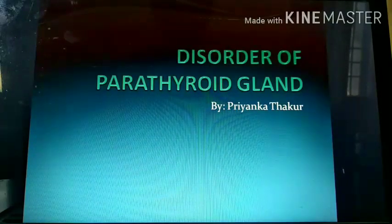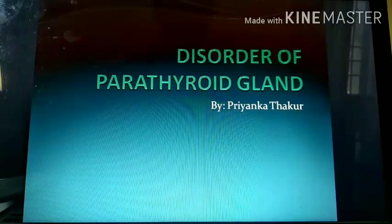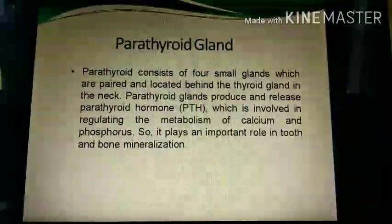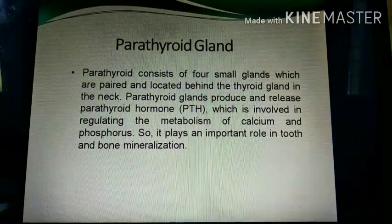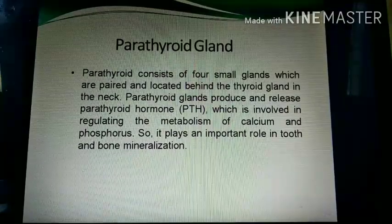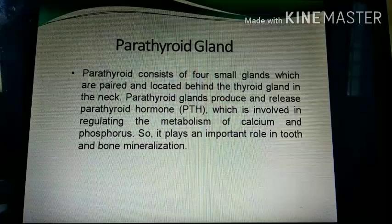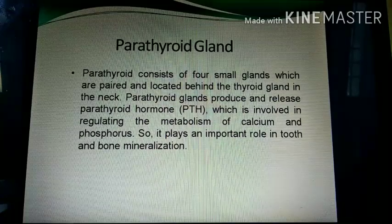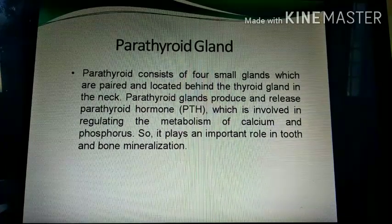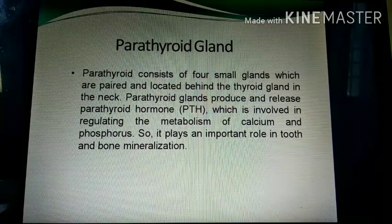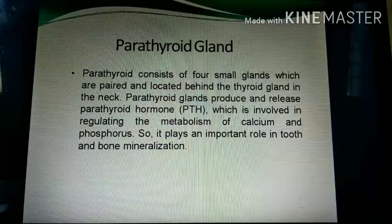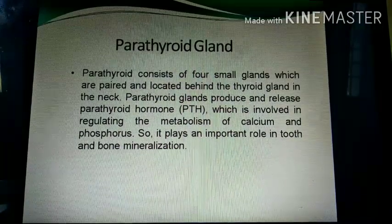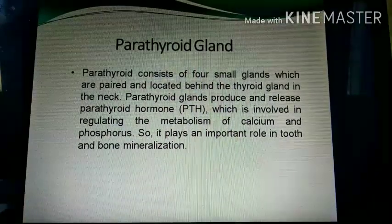Today's topic is disorder of parathyroid gland. The parathyroid gland is situated at the posterior surface of the thyroid gland. There are normally four parathyroid glands, paired and located behind the thyroid gland in the neck. The parathyroid gland produces and releases parathyroid hormone (PTH), which regulates calcium and phosphorus metabolism. It plays an important role in tooth and bone mineralization.